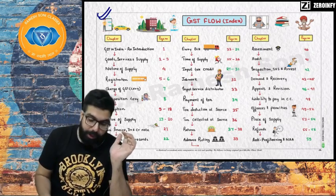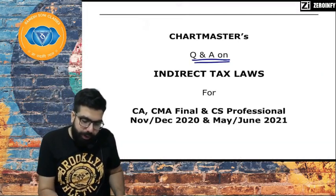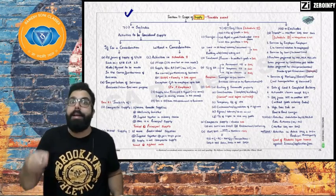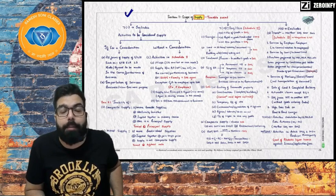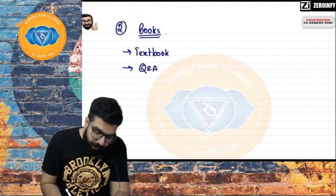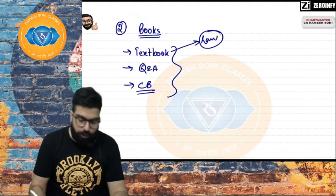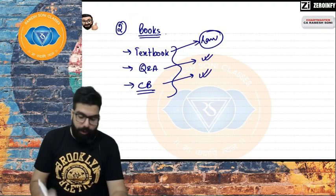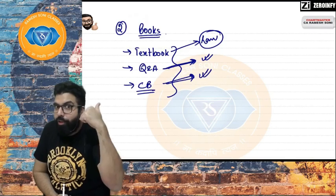If you take the hard copy, you'll get three books: the textbook, Q&A book, and chart book — all completely amended with law up to 30th April 2020, applicable for the November 2020 exam. The textbook has all the law, Q&A has practice questions, and the chart book helps with retention.